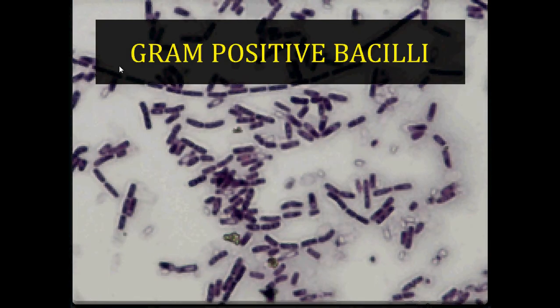Hello everybody, today we are going to look at gram-positive bacilli. These are bacteria that appear as violet or dark purple rods under a microscope after gram stain, because they take up crystal violet instead of the counter stain safranin.